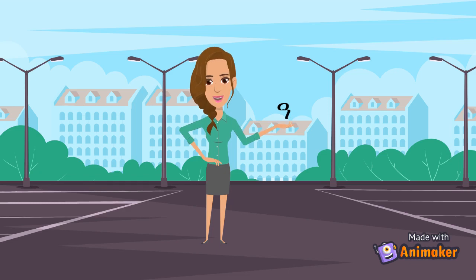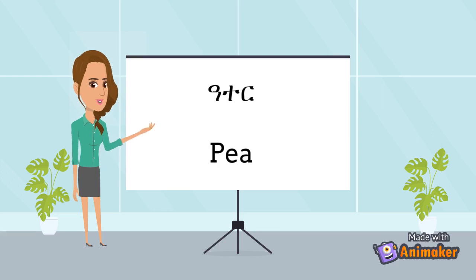Our fourth letter is A. One word that has the letter A is ATER. This means P.